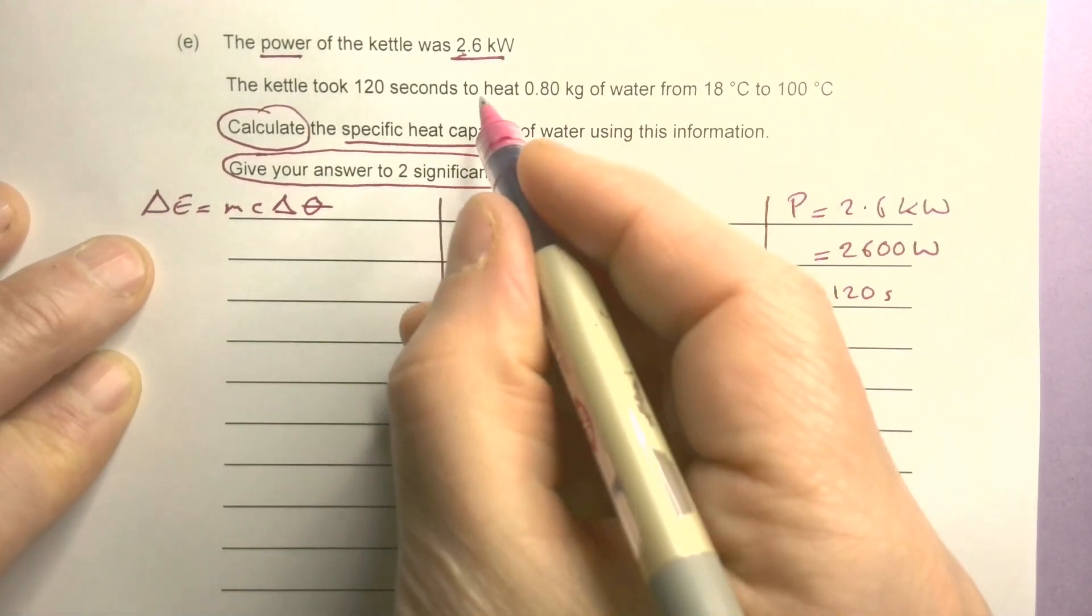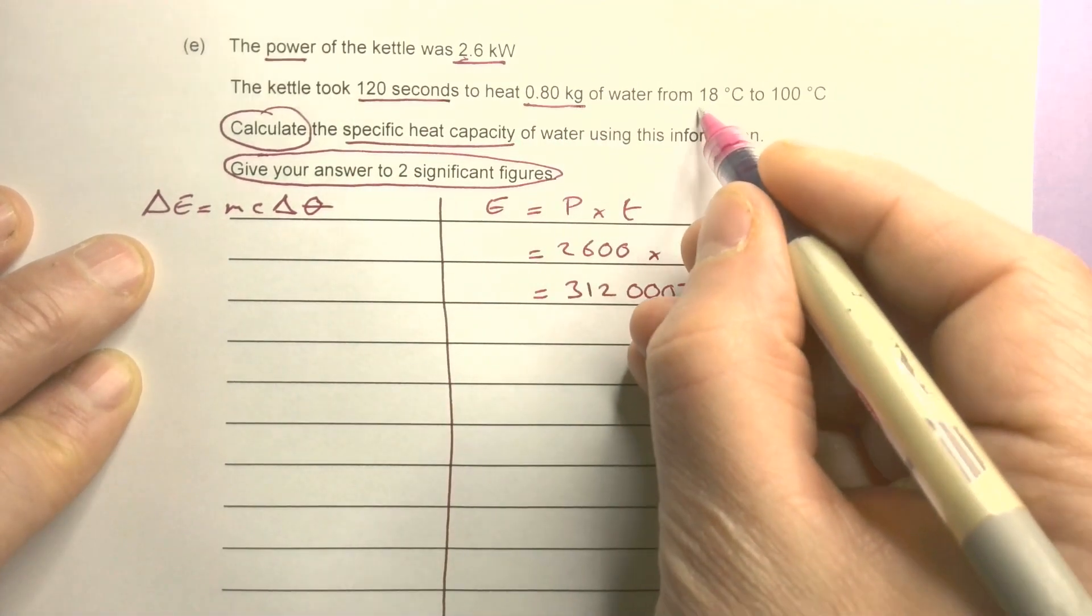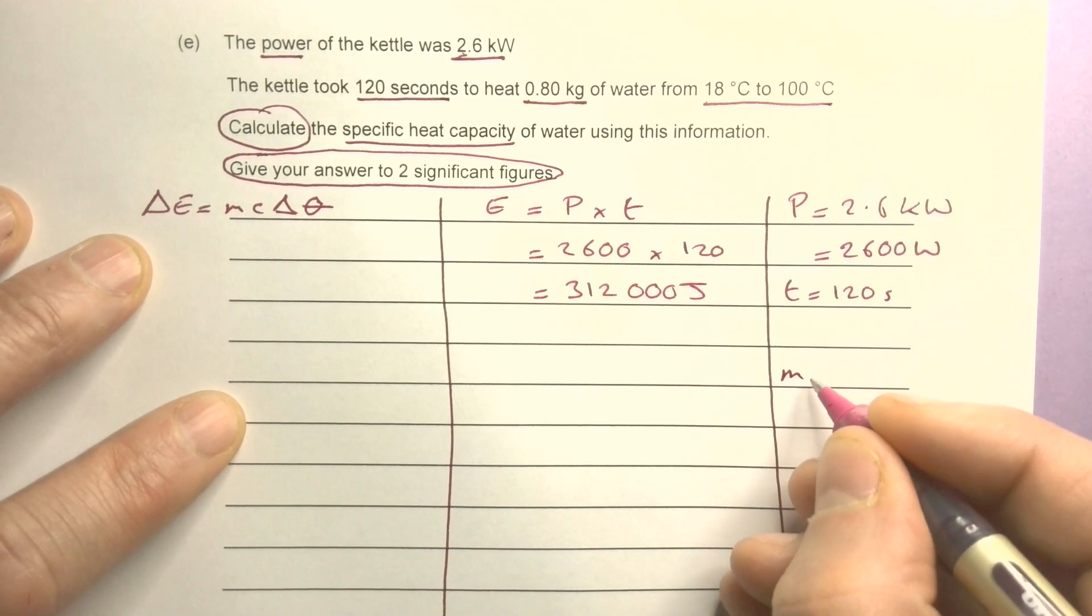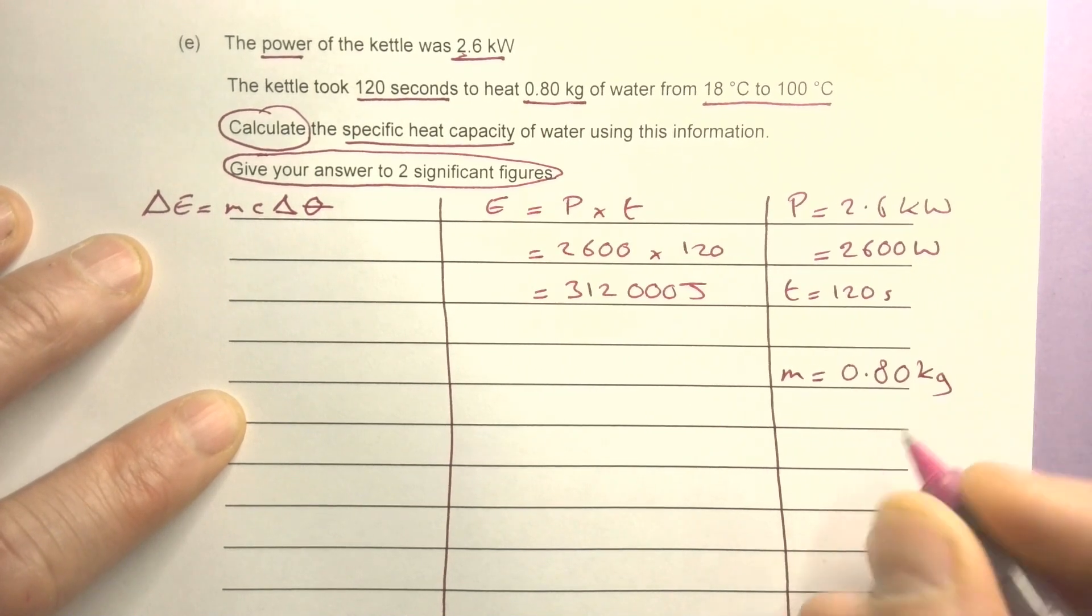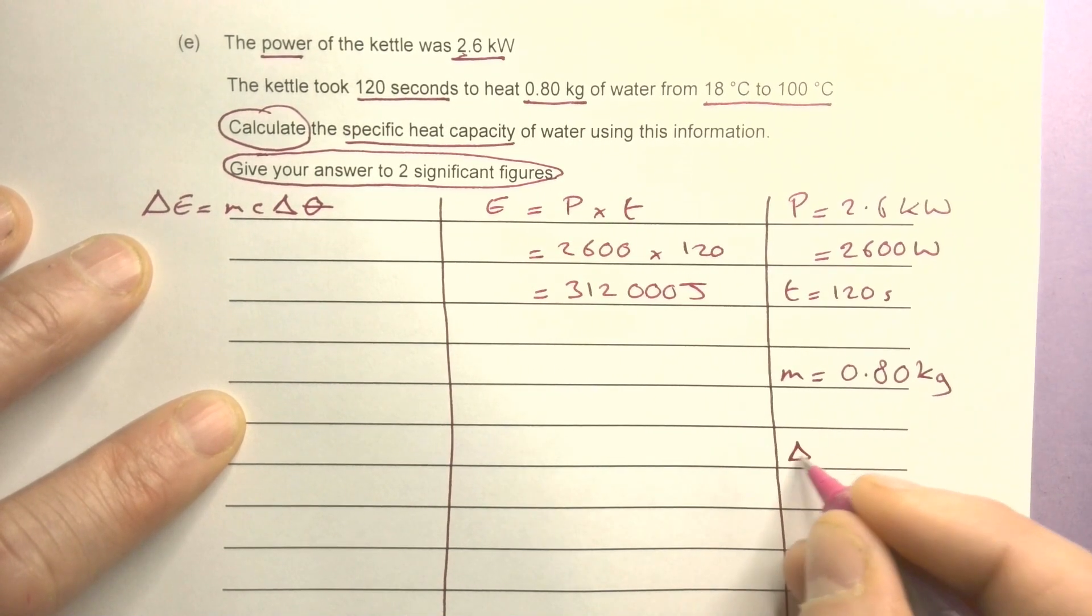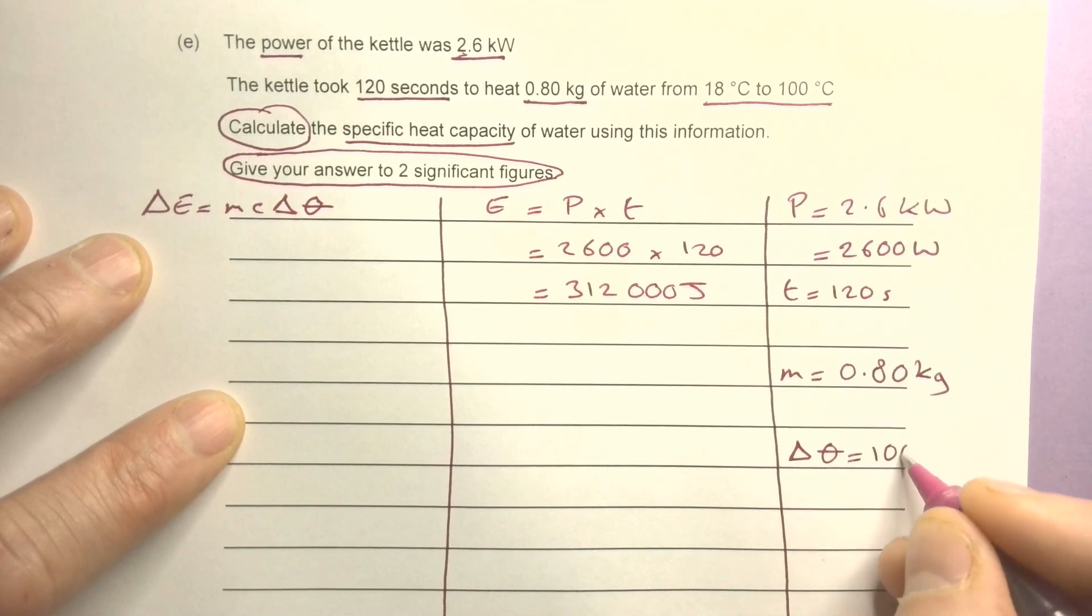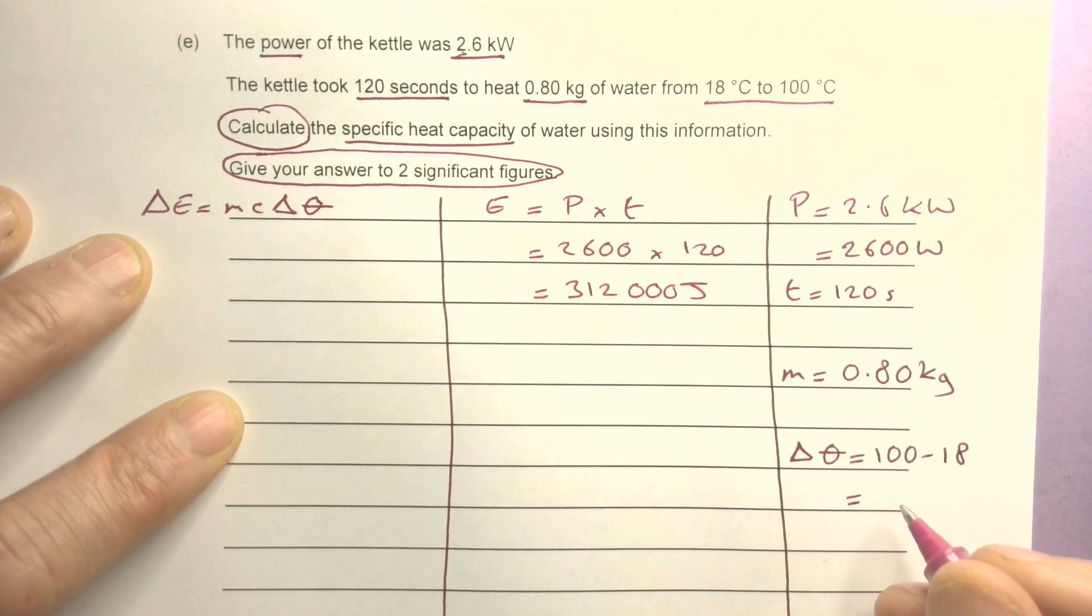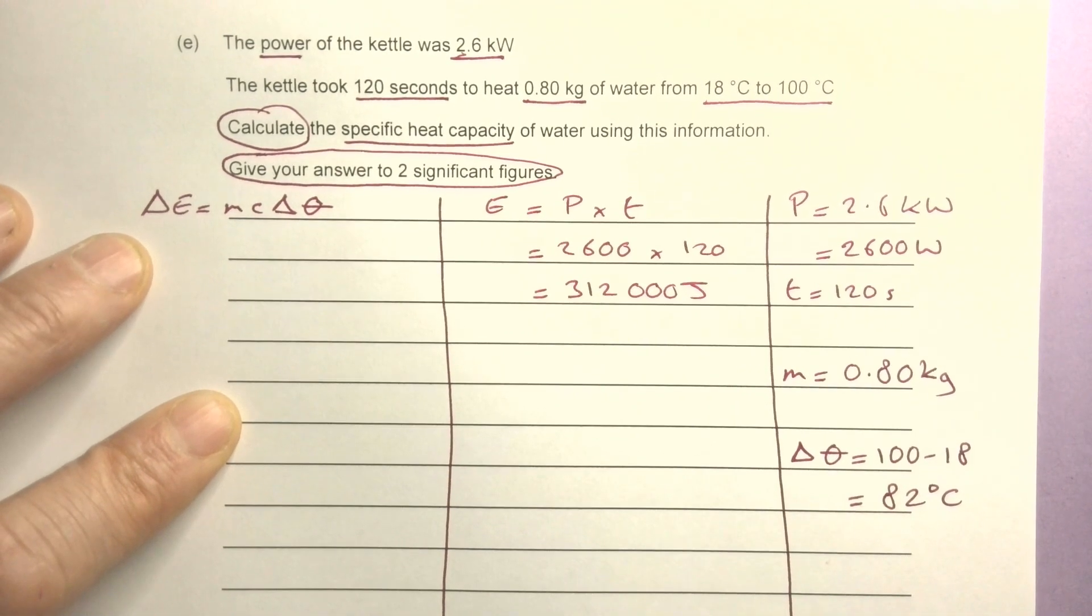What else have I got? I've got 0.8 kilograms - that's a mass. I've got change in temperature. So mass is 0.80 kilograms and change in temperature is 100 minus 18, which equals 82 degrees Celsius.